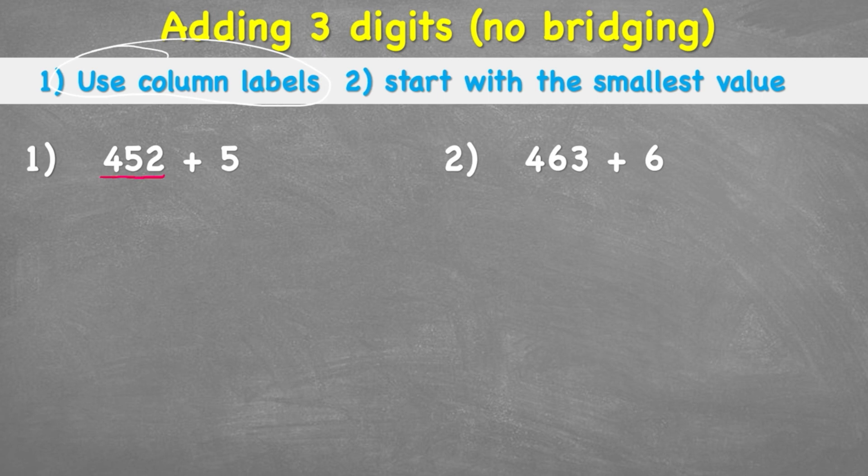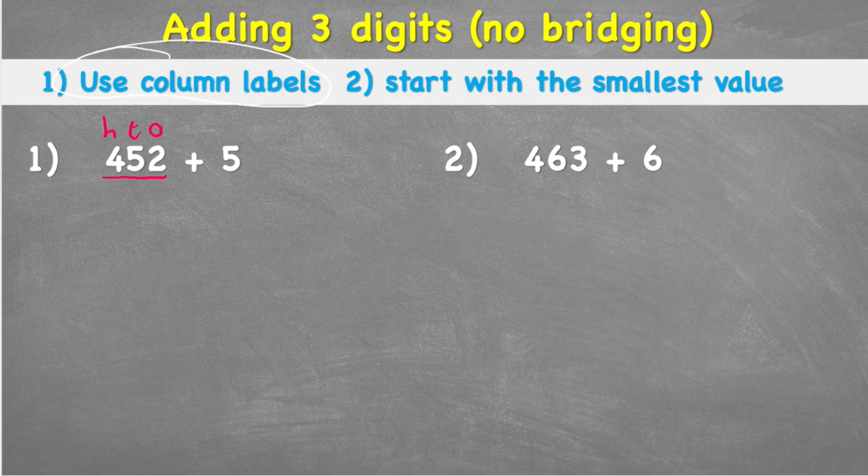So first let's look at this 452. Well, 452, our 2 is in our 1s column. Our 5 is in our 10s column. And our 4 is in our 100s column.